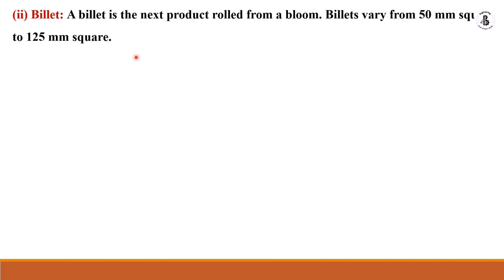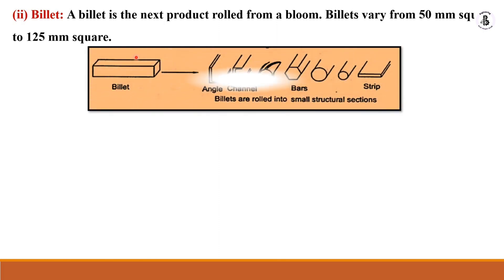A billet is the next product rolled from the blooms. The billet is manufactured from blooms and has a cross-sectional area of 50 mm to 125 mm square.